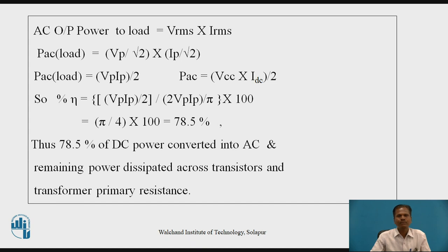So PAC equals VCC·IDC divided by 2. The percentage efficiency of Class B Power Amplifiers equals (VP/2) divided by (2VP/π), multiplied by 100, which equals π/4 × 100 = 78.5%. So 78.5% of DC power is converted into AC power, and the remaining power is dissipated across the transistors and transformer primary resistance.